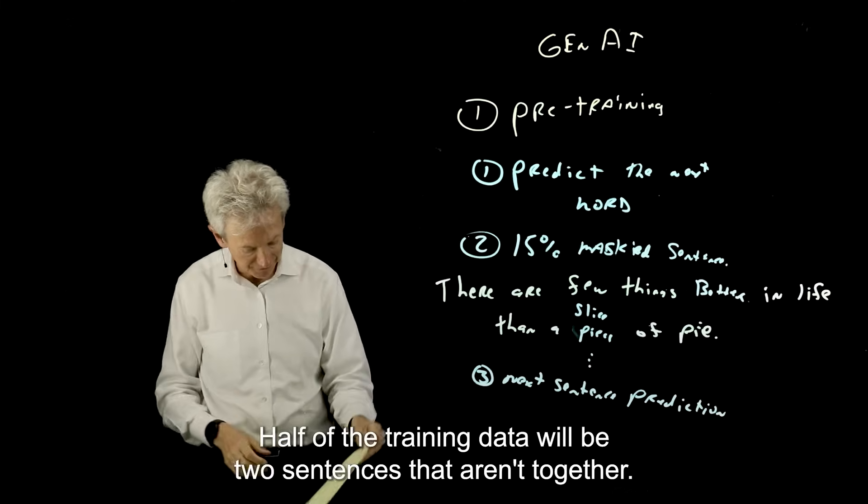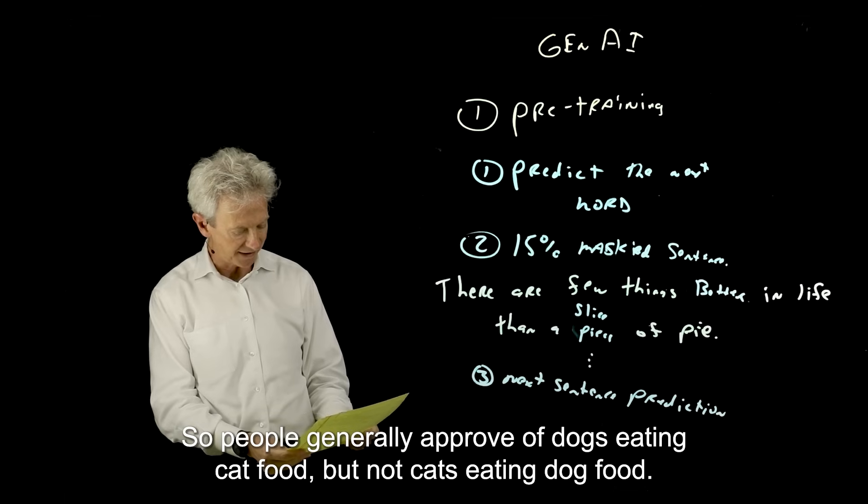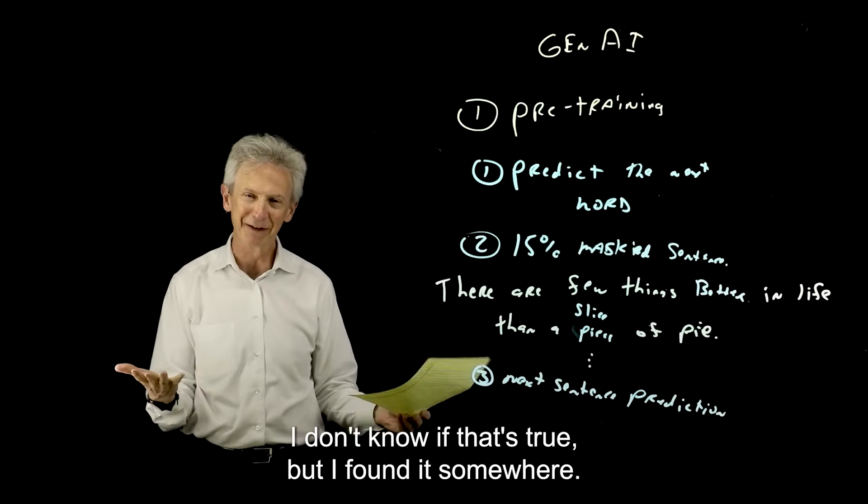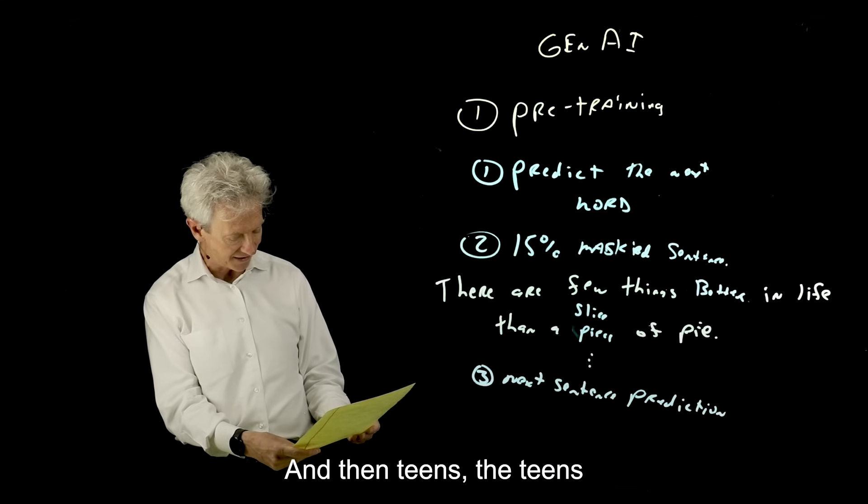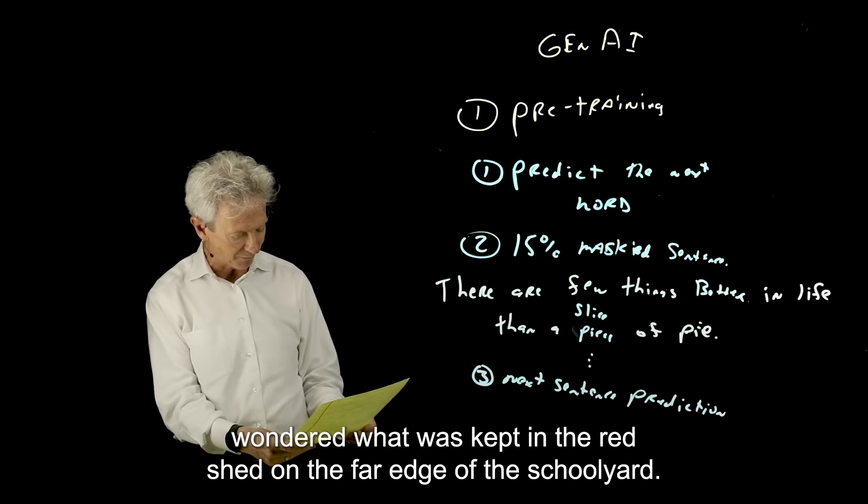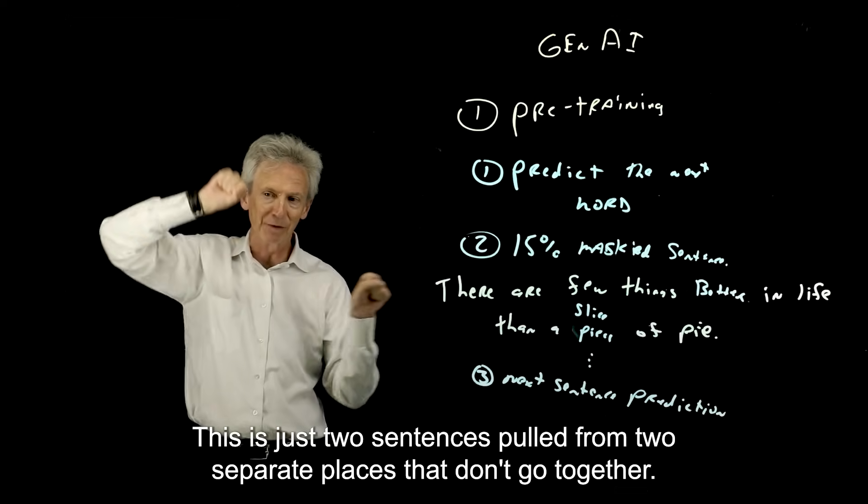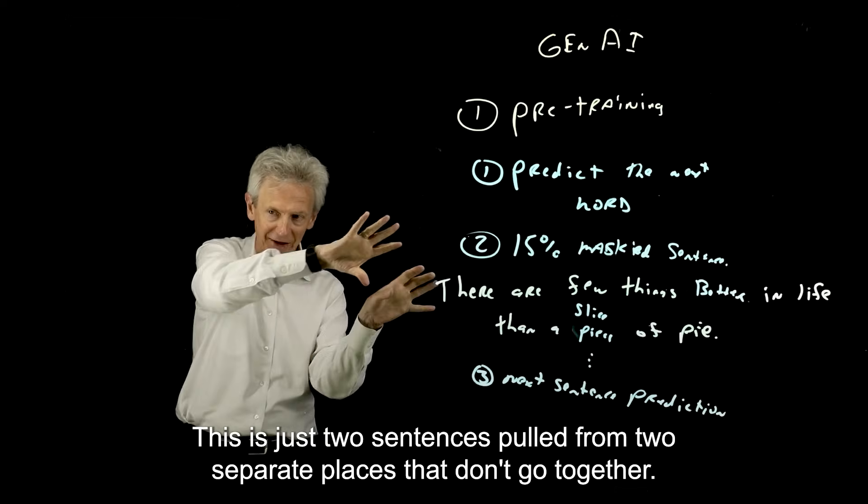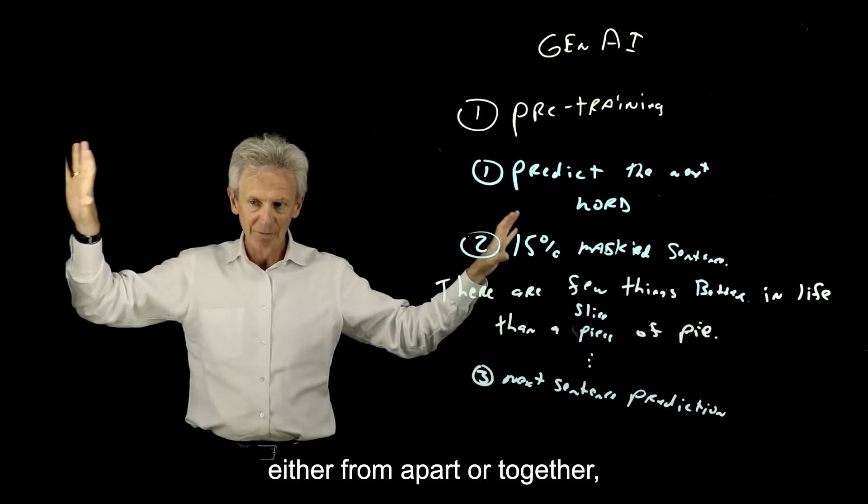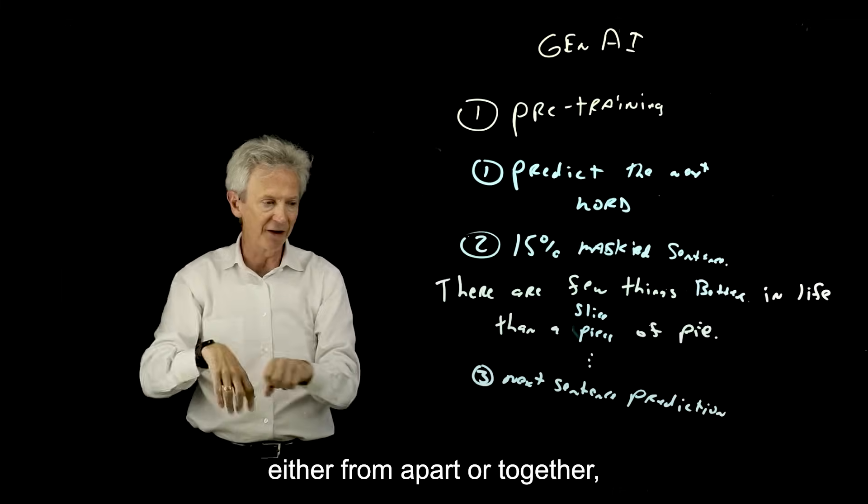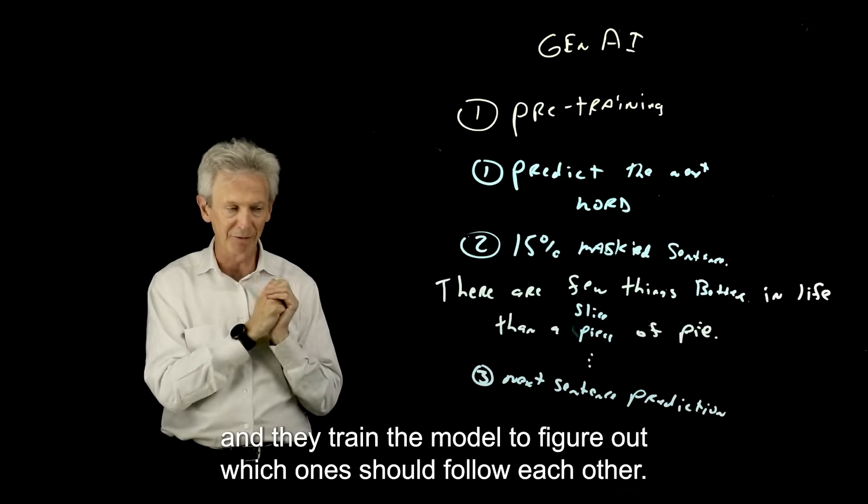Half of the training data will be two sentences that aren't together. So people generally approve of dogs eating cat food, but not cats eating dog food. I don't know if that's true, but I found it somewhere. And then teens, the teens wondered what was kept in the red shed on the far edge of the schoolyard. These are just two sentences pulled from two separate places that don't go together. So essentially, they take these pairs of sentences, either apart or together, and they train the model to figure out which ones should follow each other.